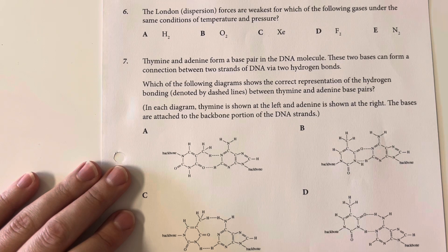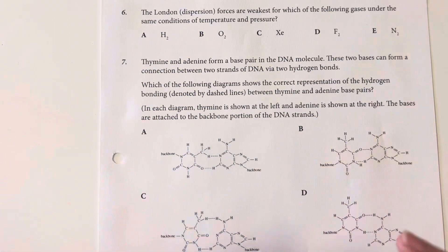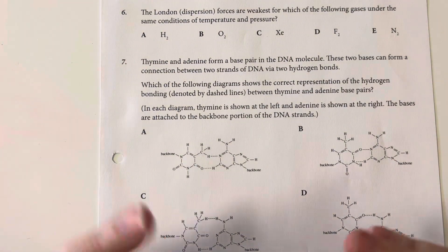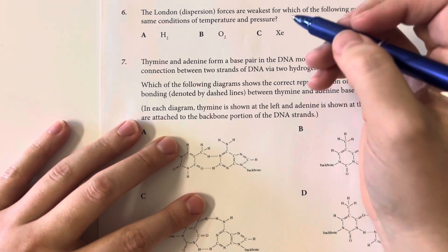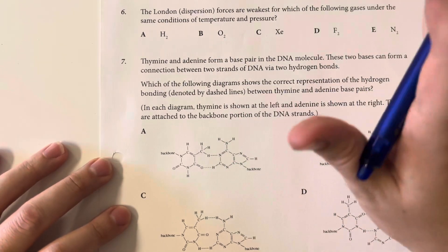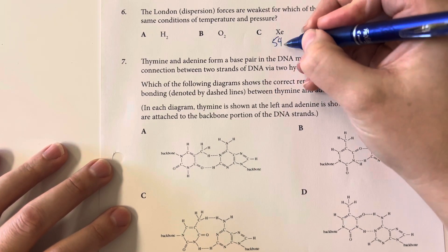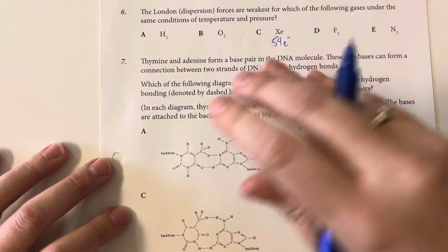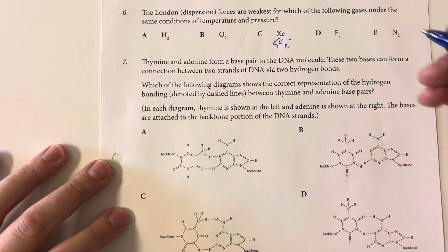London dispersion forces are weakest for which of the following gases under the same conditions of temperature and pressure? London dispersion forces rely on temporary dipoles that exist on any molecule. We can increase the likelihood of temporary dipoles by increasing the number of electrons present. Even though xenon is a noble gas, it has a higher likelihood of creating stronger London dispersion forces because it has 54 electrons — those electrons could very easily migrate to one side and create a quite high charge differential.